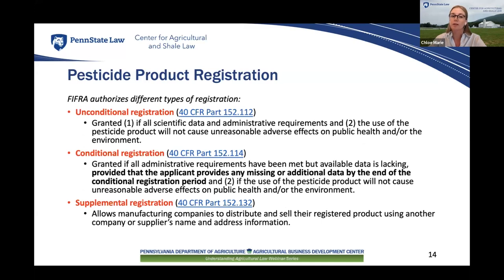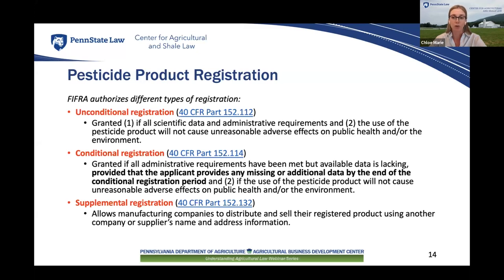There are several types of pesticide registrations, including unconditional, conditional, and supplemental registrations. The EPA will approve unconditional registration when all FIFRA requirements have been satisfied, all required data has been submitted, and the EPA determines that use of the product will not result in unreasonable adverse effects. The EPA will grant a conditional registration when it needs more information but has determined that the benefits of making the product available outweigh the risks. The applicant must provide additional data within a specified timeframe, or the EPA may cancel the registration.